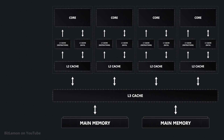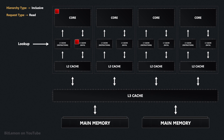Let's look at an example. Assume we have an inclusive cache hierarchy with three levels. A read request will always start at the highest cache level, L1. If the requested address is found in L1, the data is simply forwarded to the processor core. If the address is not in L1, the search moves to L2. If the address is found in L2, the data is copied to L1 and then forwarded to the processor core. This step is important since having the data in L1 improves the hit rate if the same address is accessed again soon.